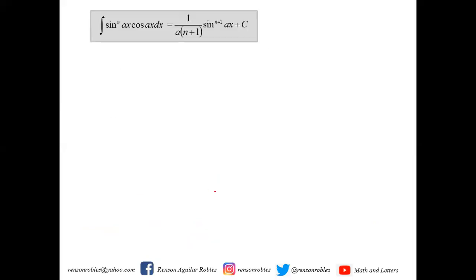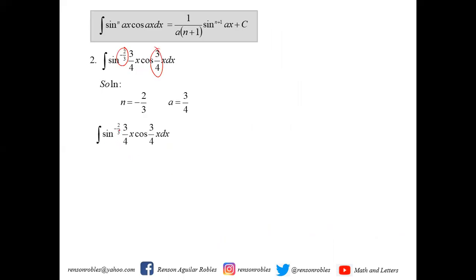Now applying this formula, we integrate sine raised to negative 2/3 of (3/4)x times cosine (3/4)x dx. Here n equals negative 2/3 and a equals 3/4. Using the formula, the integral equals 1 over [a times (n+1)] times sine raised to (n+1) of ax plus c, which becomes 1 over [3/4 times (negative 2/3 + 1)] times sine raised to (negative 2/3 + 1) of (3/4)x plus c.